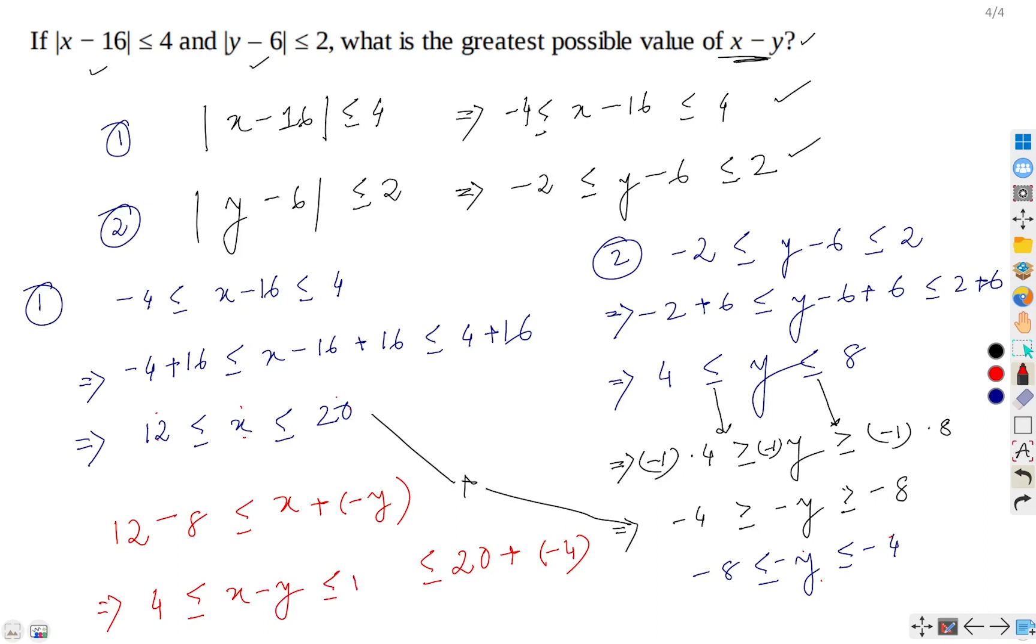So, what is the greatest possible value we obtain? 16. Therefore, 16 is the correct answer.